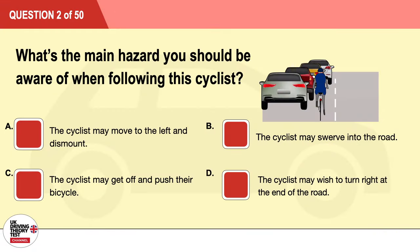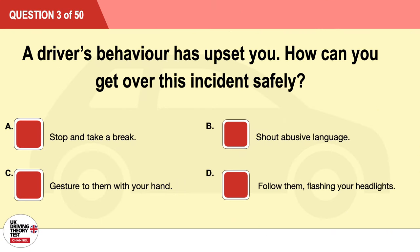Question 2: What's the main hazard you should be aware of when following this cyclist? A: The cyclist may move to the left and dismount. B: The cyclist may swerve into the road. C: The cyclist may get off and push their bicycle. D: The cyclist may wish to turn right at the end of the road. The correct answer is B: the cyclist may swerve into the road.